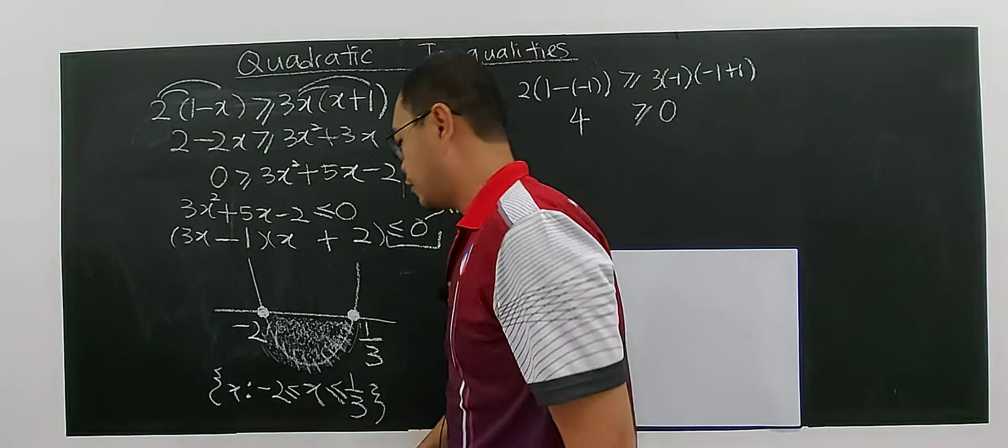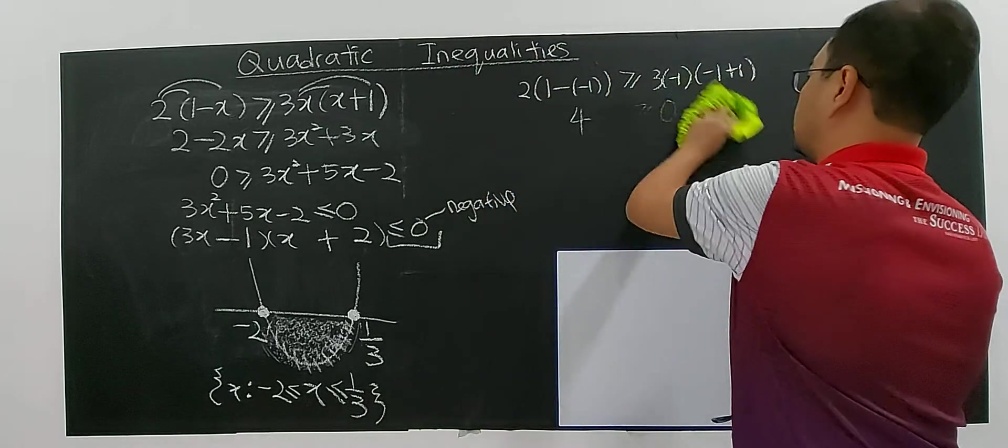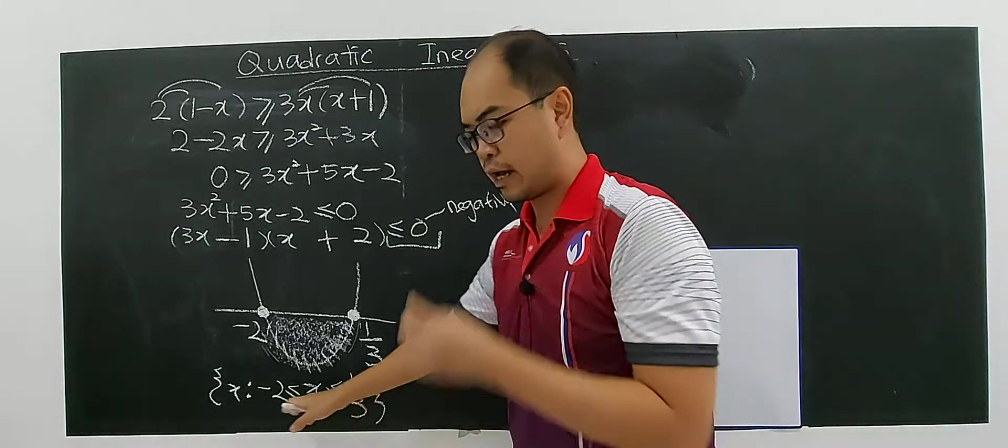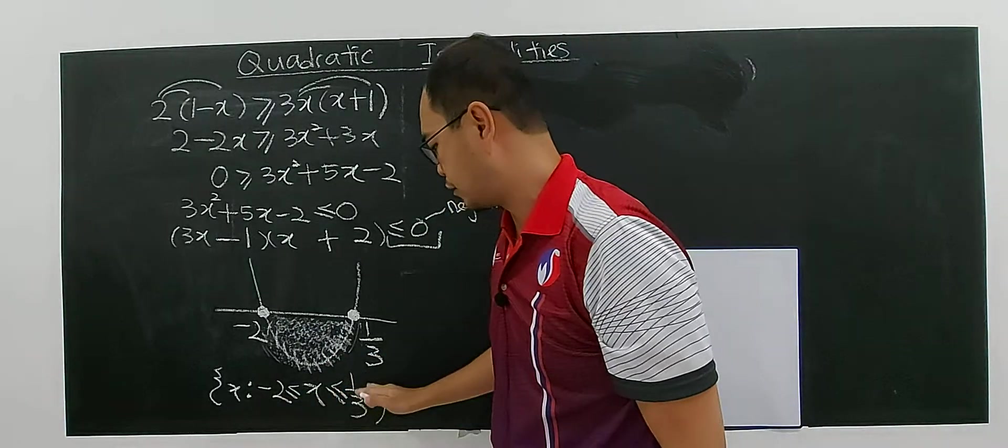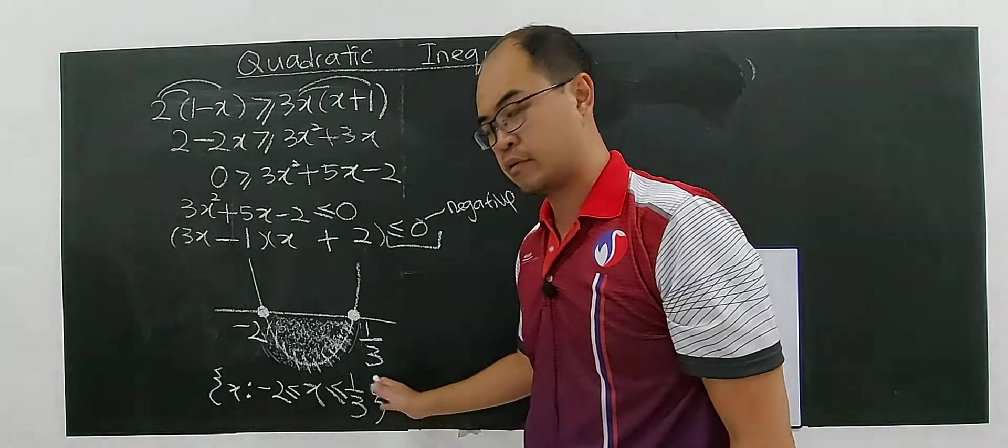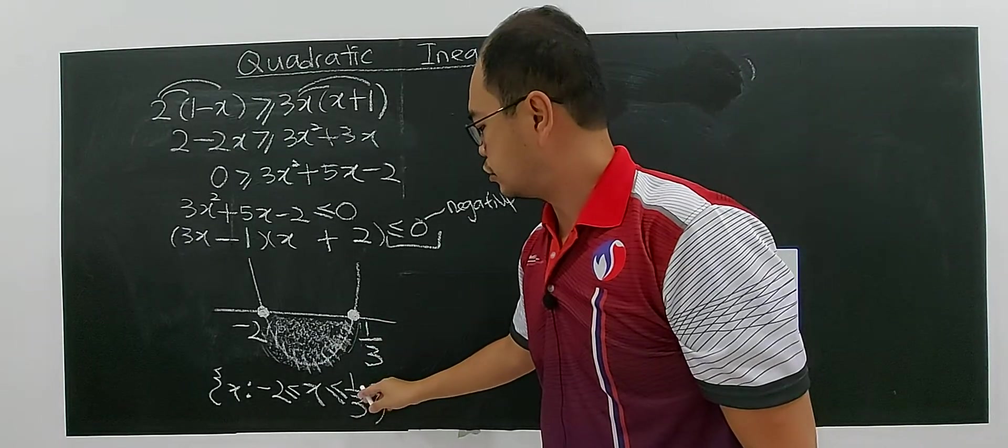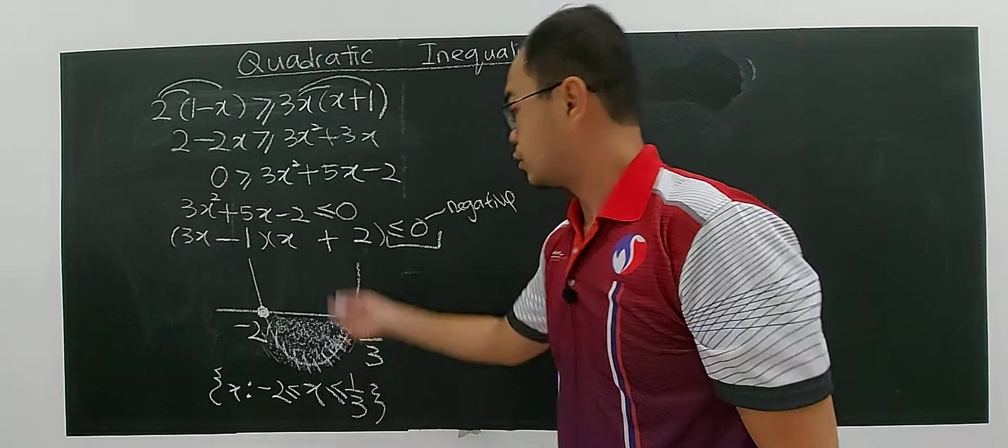So what if you put value that's not in this range? Any value that not in this range. For example, I choose to be one. One is outside the range. So I choose one or maybe I choose two.